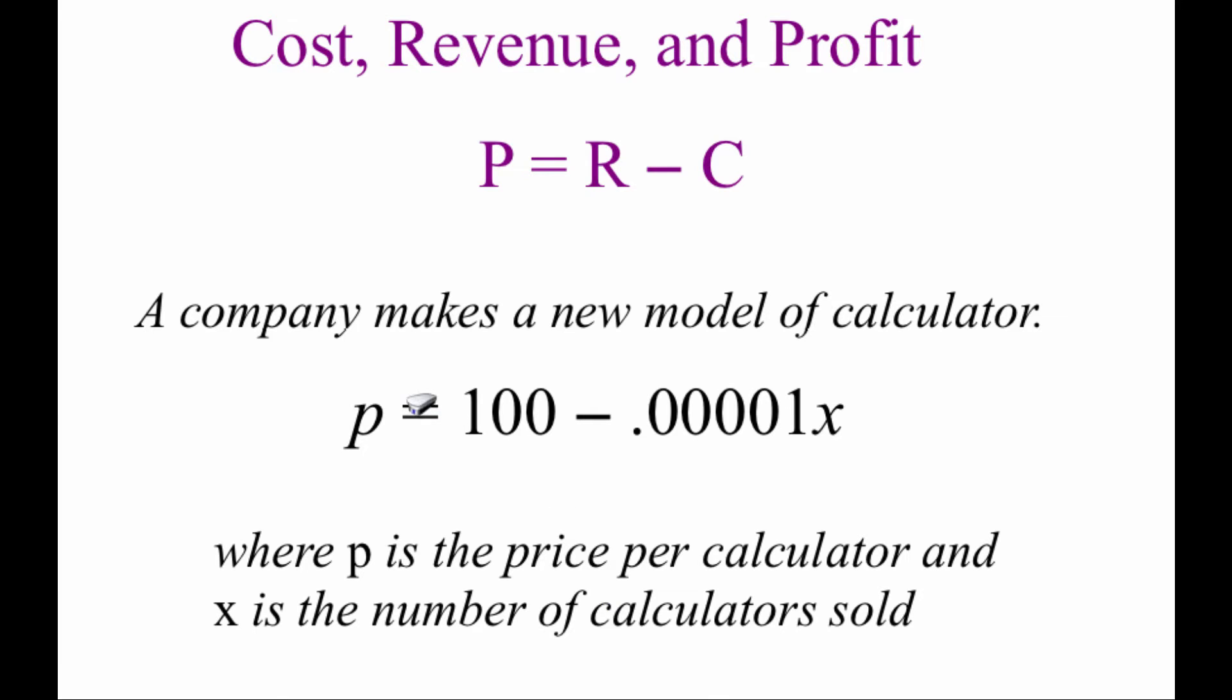They came up with this price function, P equals 100 minus .00001X. P stands for the price of the calculator, and X stands for the number of calculators that we're going to sell. So it's that kind of whole supply and demand thing, the price of our calculator is based on how much people want it.